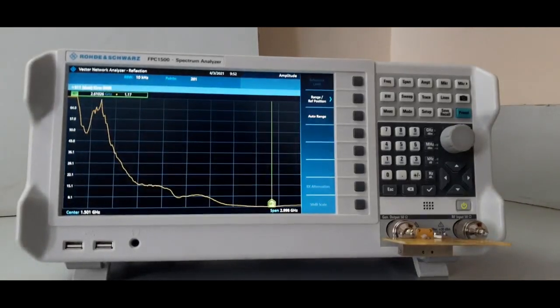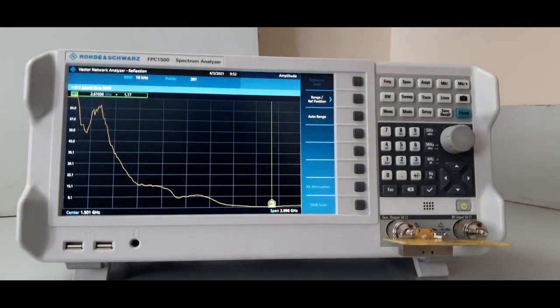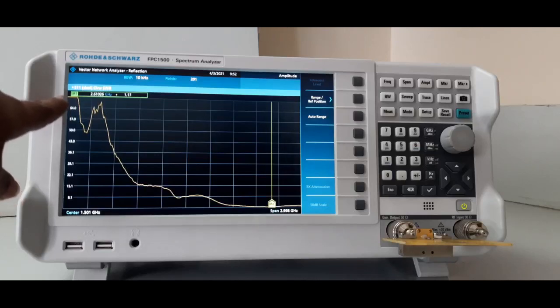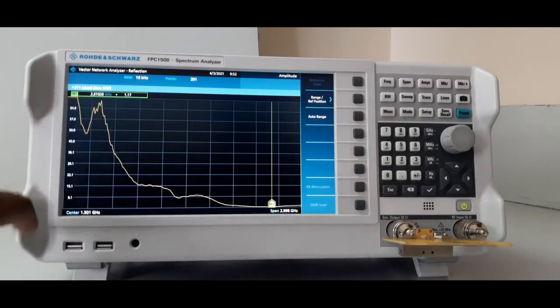1.17, 2.6 gigahertz. Designed for 2.5 gigahertz, it is operating at 2.6 gigahertz. 1.17 is the lowest. For other frequencies, it is increasing up to 64 is there, 70, up to 70. We can check in this instrument.